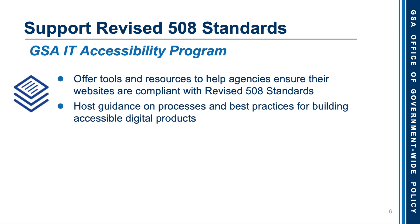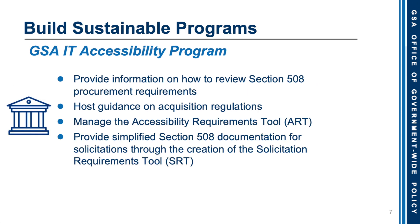We support the revised Section 508 standards, and we offer tools and resources to help agencies ensure that their websites are compliant with these revised 508 standards. We host guidance, processes, and best practices for building accessible digital products. We build sustainable programs. We provide information on how to review Section 508 procurement requirements. We host guidance on acquisition regulations. We manage the Accessibility Requirements Tool, otherwise known as ART, which helps generate standardized language for procurement. We provide simplified Section 508 documentation for solicitations through the Solicitations Requirements Tool, or SRT, which evaluates solicitations for accessibility language.